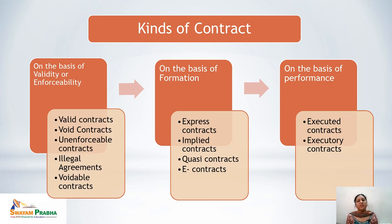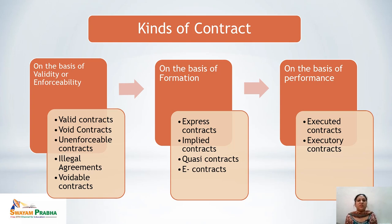The third category of contracts is on the basis of performance, which includes executed contracts and executory contracts. Executed contracts are those where both parties have performed their obligations. For example, if Mr. A offers to sell his house to Mr. B, Mr. B pays, and Mr. A delivers the property papers, both parties have fulfilled their responsibilities — this is an executed contract.